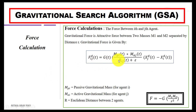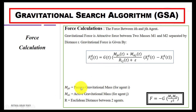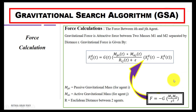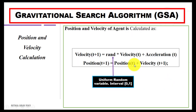For force calculation, we use the equation for attractive force between two masses. In this equation, there is the passive gravitational mass and the active gravitational mass, along with the Euclidean distance between two agents. This transforms the standard gravitational force equation into the form used in the algorithm.